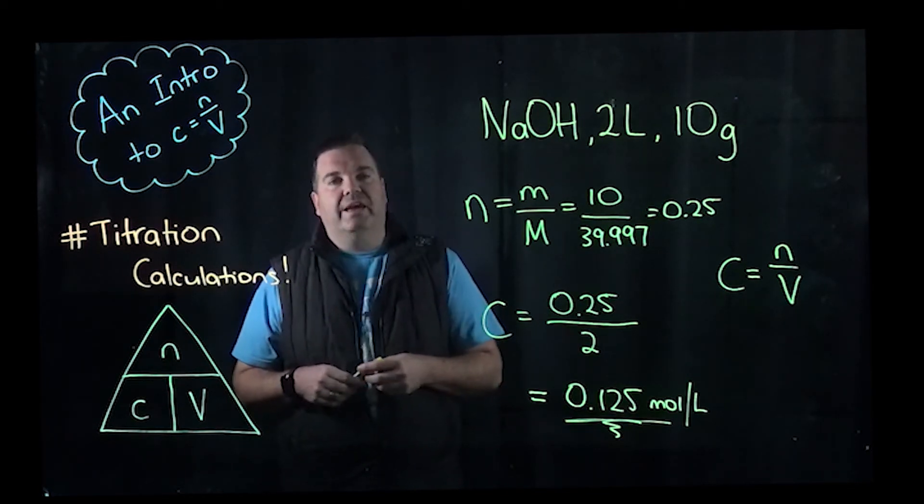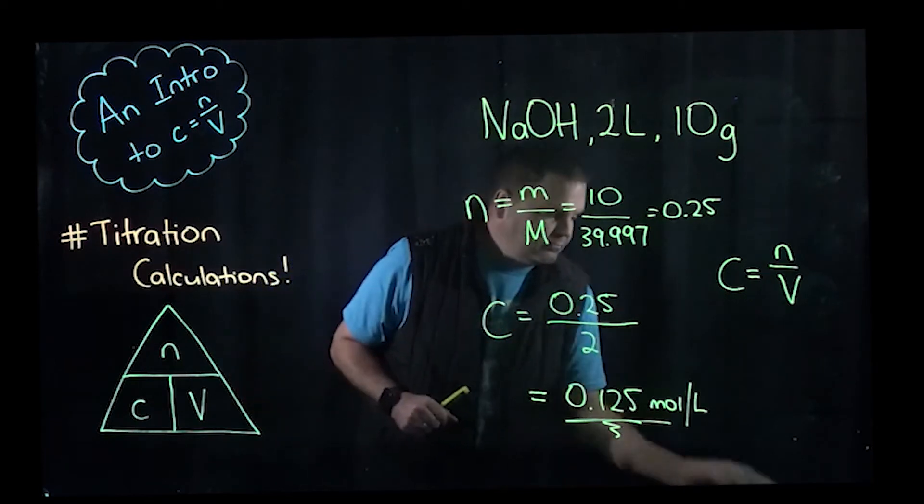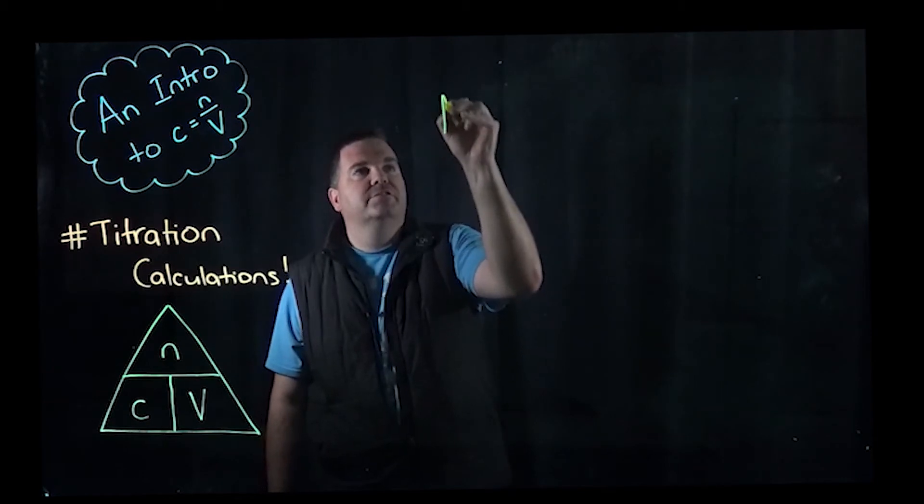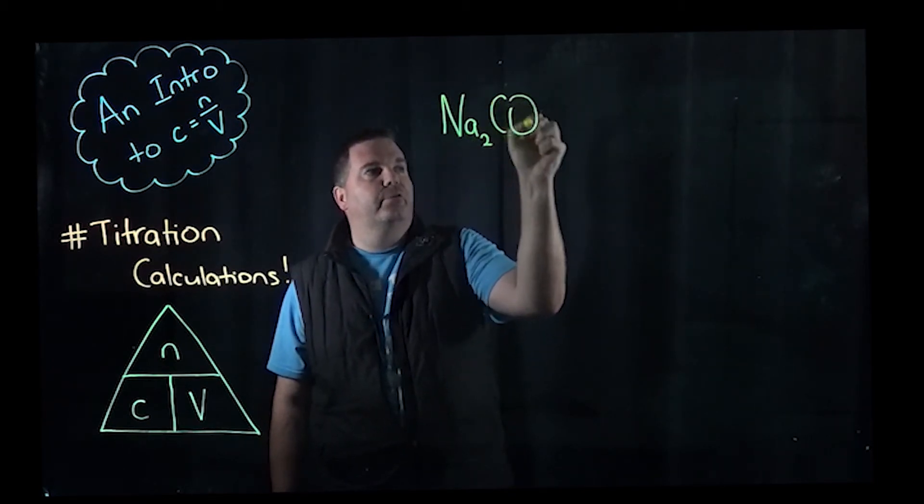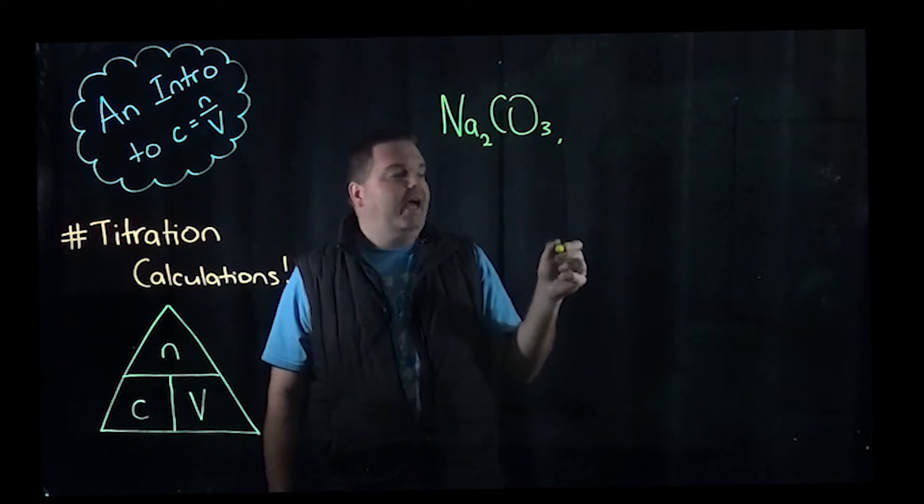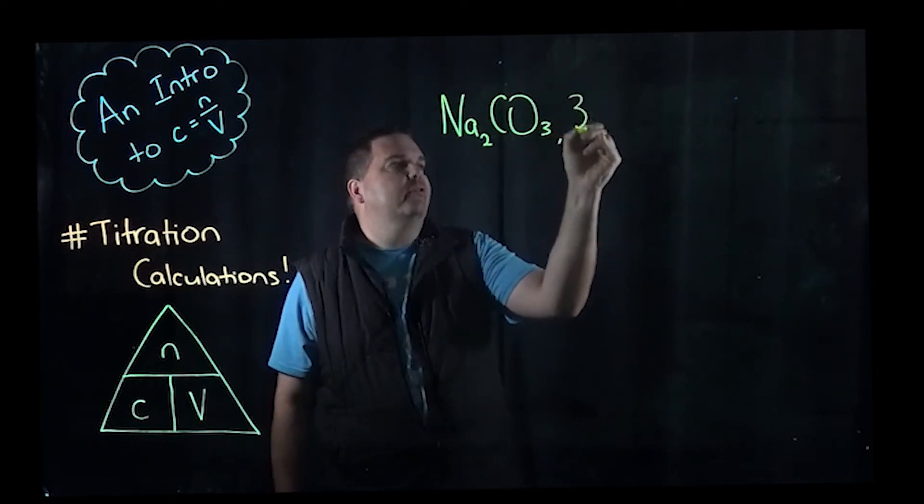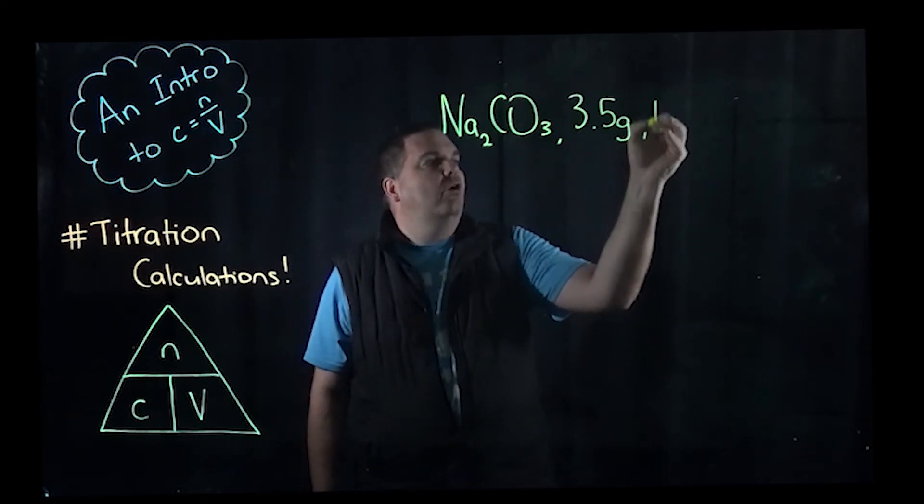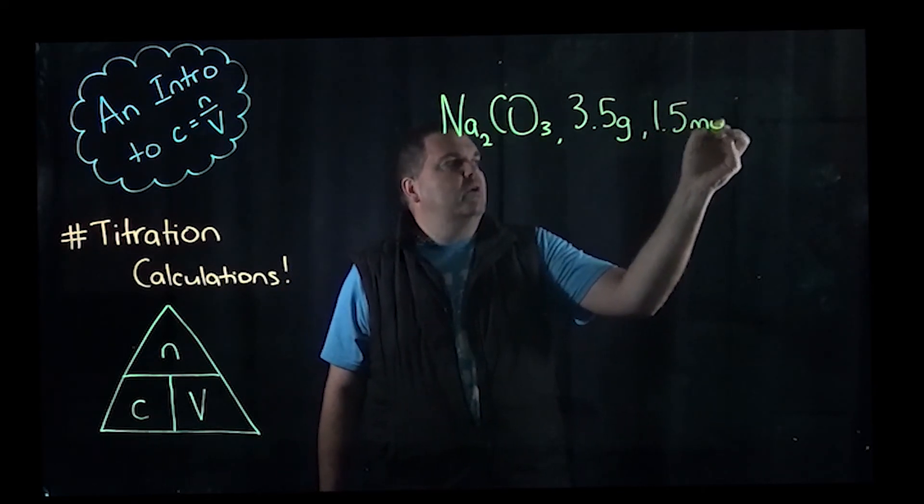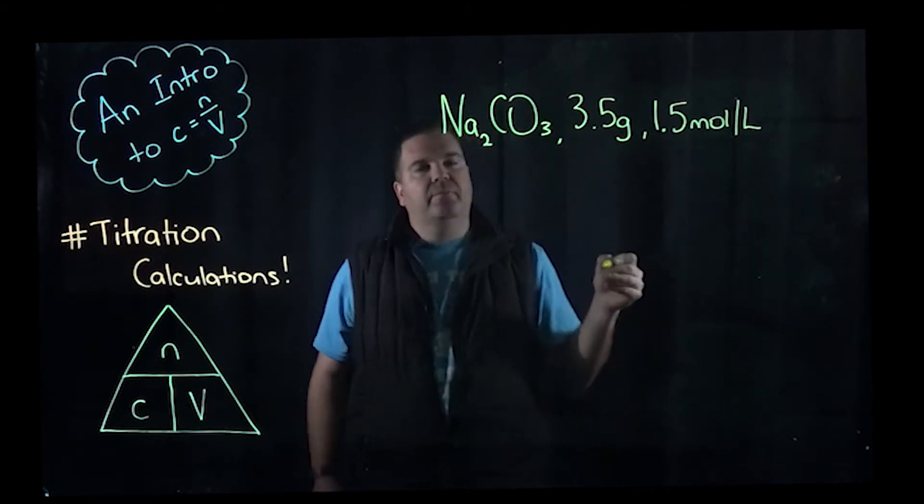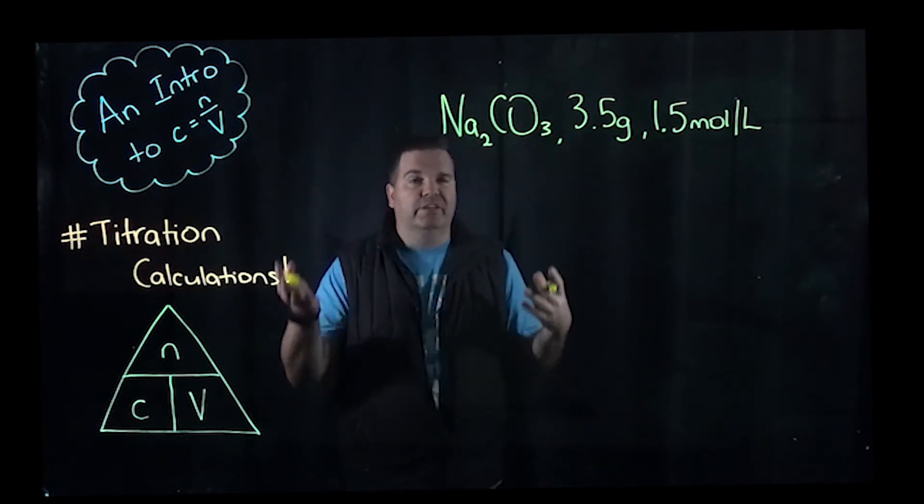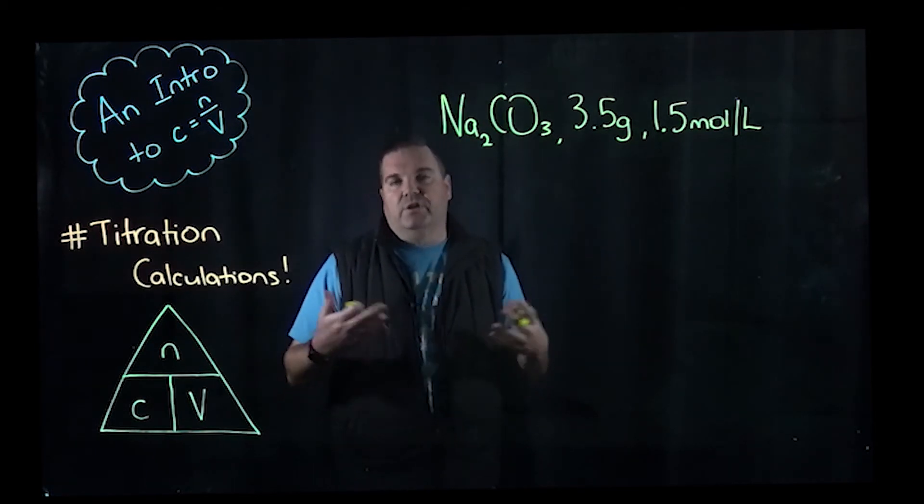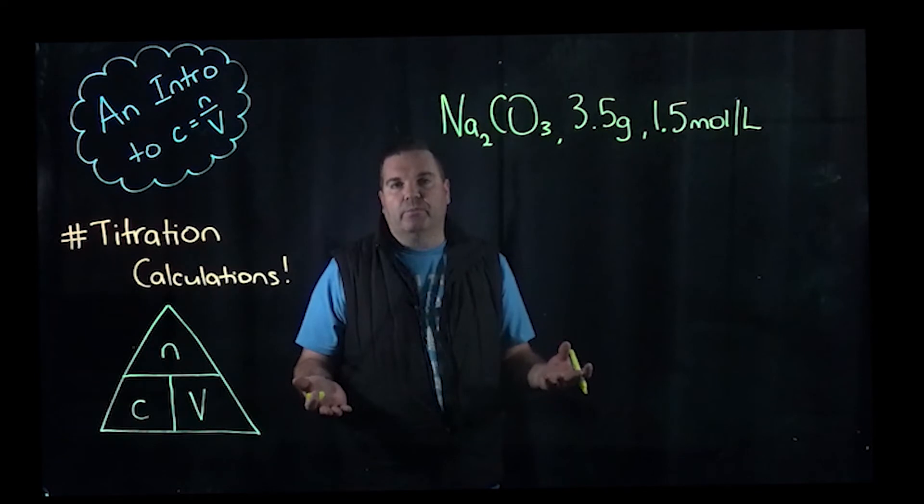Next one I'm going to show you is how we calculate volume. So let's say we had this time a solution of sodium carbonate Na2CO3. Let's say we had 3.5 grams of it and we want to make a concentration of 1.5 moles per litre. So we might be in the lab, we want to get as much as we can of a concentration of 1.5 moles per litre, but we've only got 3.5 grams. So how much can we actually make?